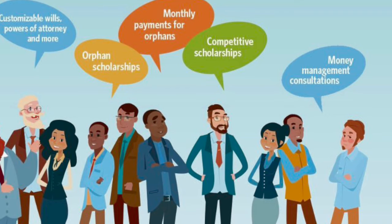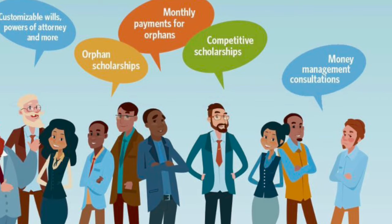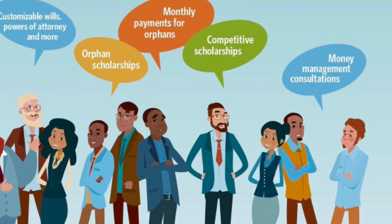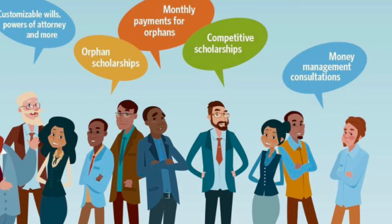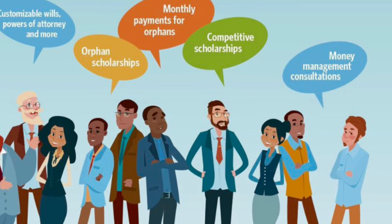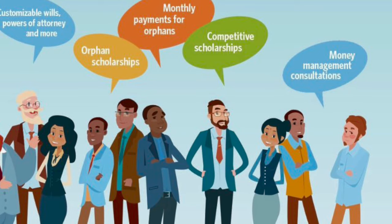Monthly payments to orphans: this benefit is dedicated to assisting the children of deceased family members. One of the potential benefits includes a monthly payment for those who have lost both parents. The compensation is applied to the legal guardian of the orphan at no cost, and the amount of these payments may extend up to nine hundred dollars per month, per child.